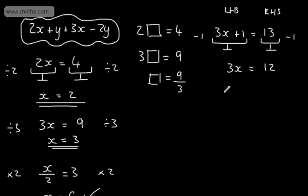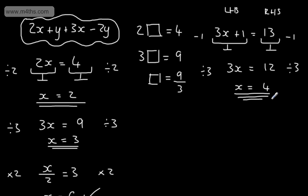I'm now going to divide both sides of the equation by 3. If I divide both sides by 3, that will give me the value of 1x. So 1x is going to be equal to 12 divided by 3, which gives me 4. So all I've done is the opposite — subtracted 1 and divided by 3. Let's check that it works. If x is equal to 4, then 3 times by 4 is 12, plus 1 is equal to 13. Correct.